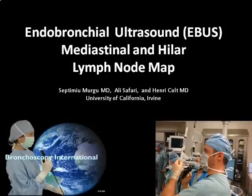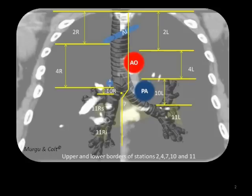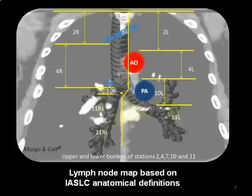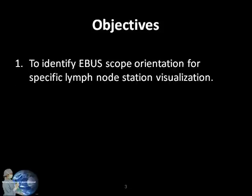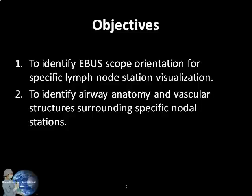The accurate assessment of mediastinal and hilar lymph node involvement is an essential part of lung cancer patient management, contributing to staging and disease prognosis. In this instructional video, we will demonstrate how EBUS bronchoscopy can be used to map mediastinal and hilar structures. Our descriptions are based on precise anatomical definitions provided by the International Association for the Study of Lung Cancer, using dynamic imaging techniques, with positioning of the EBUS bronchoscope inside the airways described alongside vascular and airway structures surrounding specific nodal stations.